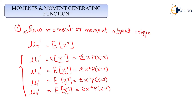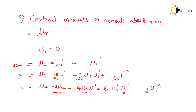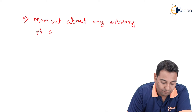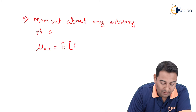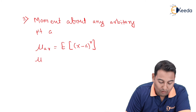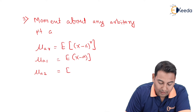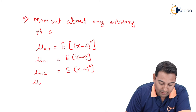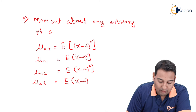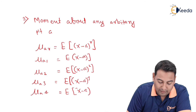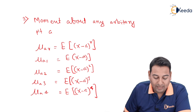The next formula is moment about any arbitrary point a, written as mu_a_r, which equals expectation of (x minus a) raised to r. For the first moment: E[(x minus a) raised to 1]. For the second moment mu_a2: E[(x minus a) squared]. For the third moment: E[(x minus a) cubed]. And for the fourth moment mu_a4: E[(x minus a) raised to 4].